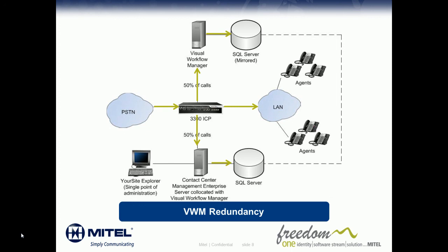The contact center management enterprise server is collecting data and operating normally, but in the event of a failure on the enterprise server — for example due to a hardware failure — the remote instance of Visual Workflow Manager will begin handling 100% of the call traffic, while redundant ports are used to handle the extra call load and the local data cache is used while the connection to the enterprise server is down. This ensures that your IVR continues to operate normally in the event of a failure on the enterprise server.